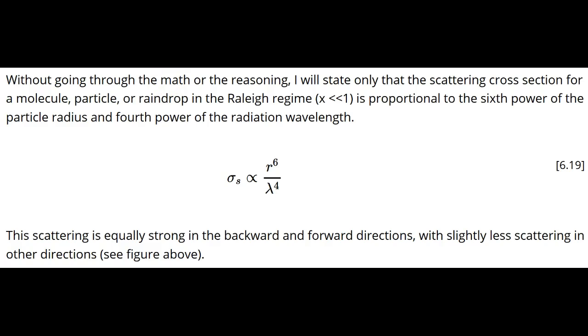Last, we should look at the dependence of the scattering cross-section on particle radius and radiation wavelength. For small size parameters, the scattering cross-section, which is just the scattering strength, is proportional to the particle radius to the sixth power and the inverse of the radiation wavelength to the fourth power.